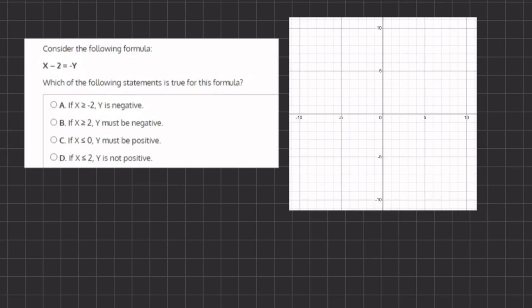In this problem we are given a formula and we want to see which of the following statements is true for our formula. Now because the question is referring to negative and positive values of our x and y, we are going to choose the tipping points of the positive and negative values, which is going to be when x equals 0 or when y equals 0.